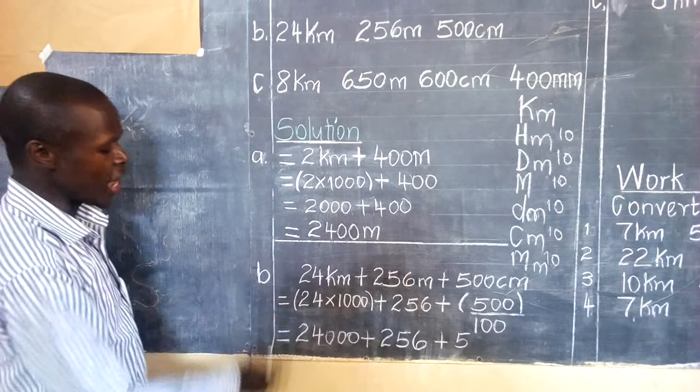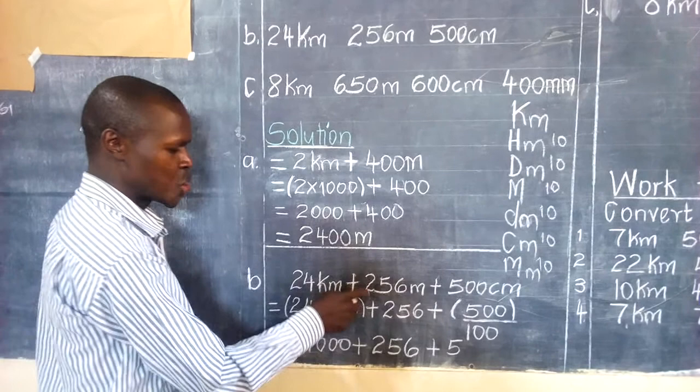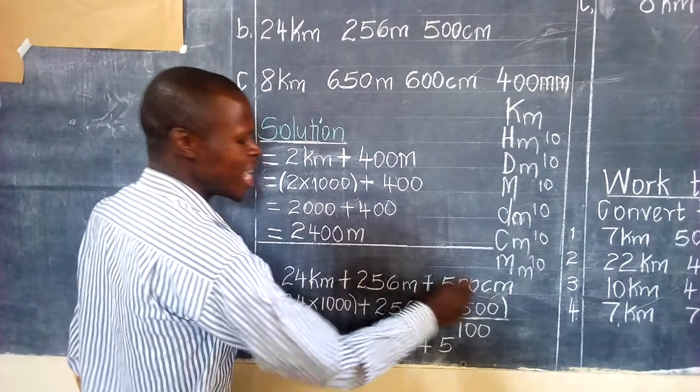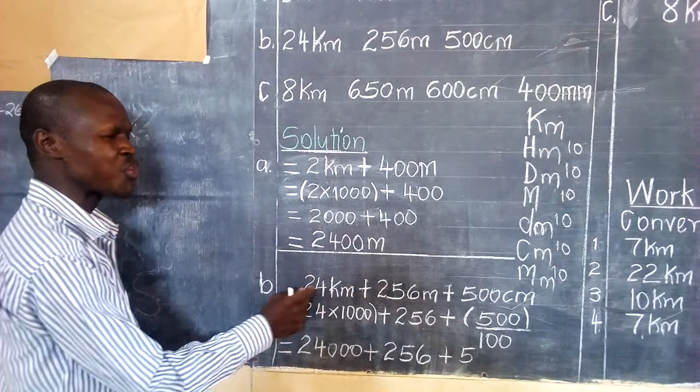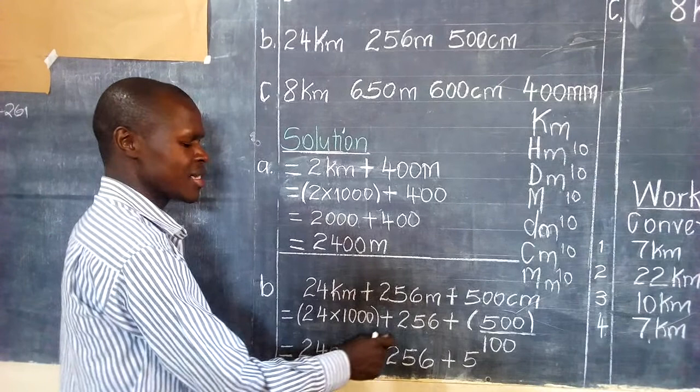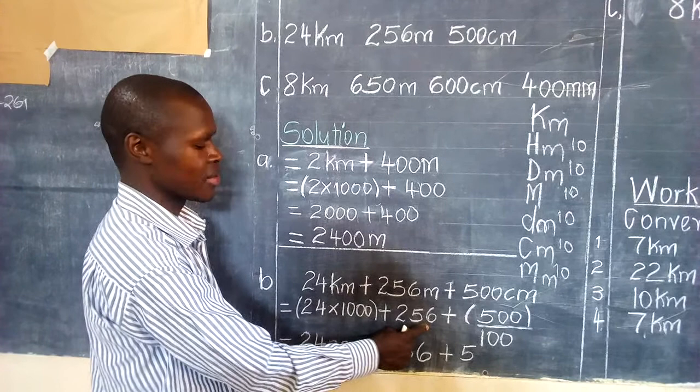Now we have problem B. We shall have 24 kilometres plus 256 metres plus 500 centimetres. What are we going to change into metres? We are only changing 24 kilometres into metres. You multiply 24 by one thousand, plus 256 metres. Why are we not changing the 256 metres? Because it is already in metres.